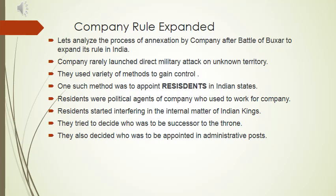These residents were like spies of the company. Gradually they started interfering in the internal matters of the king and began taking decisions on his behalf. They decided who would be the successor to the throne and who should be appointed to administrative posts. Even James Mill, a famous Scottish-British writer, noted that the residents were like the real rulers of India. They used to take the decisions and the Nawabs or kings just had to follow them — the Nawabs and kings were not in a position to say anything to the resident and had to abide by their decisions.